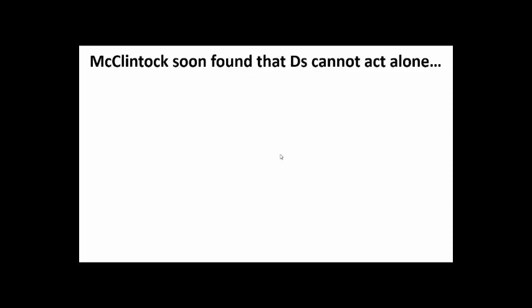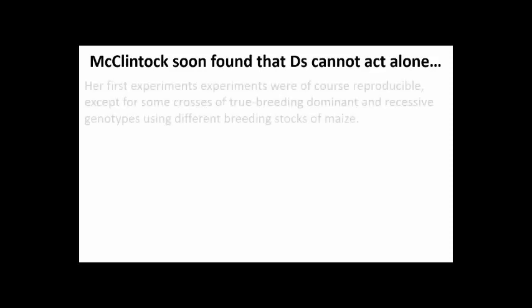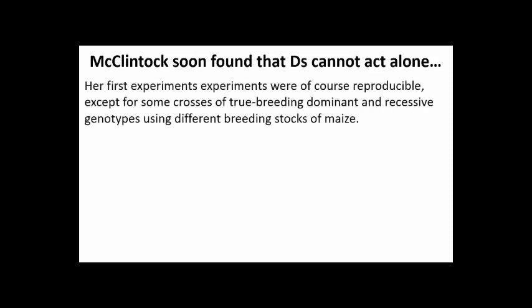It turned out that the ds element couldn't act alone. Here's how McClintock found this out. She did the same kind of parental cross as before, but this time crossed the male triple dominance with a different strain of female — one that had the same triple recessive genetic background as the first female strain. The expected triple hybrid progeny should have yielded the same phenotypes, meaning some variegated pigmented seed production. But the triple hybrid kernels in this cross were all colorless.